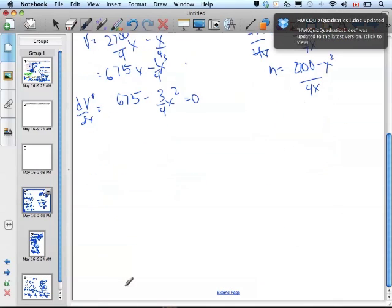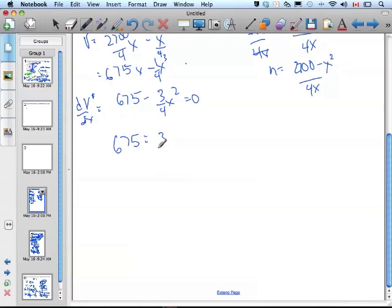I'm going to multiply both sides by 4 thirds. And so I know I get 2,700 over 3 equals x squared. And this is 900 equals x squared. And so x equals, take the square root, take the square root, and I get plus or minus 30.